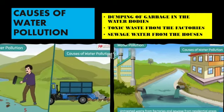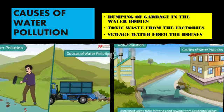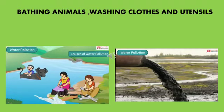The other reasons are untreated waste from factories, industrial waste, or sewage from residential areas. These are also major reasons of water pollution. Washing clothes and utensils near water bodies, and bathing animals in water bodies, are also causes of water pollution.